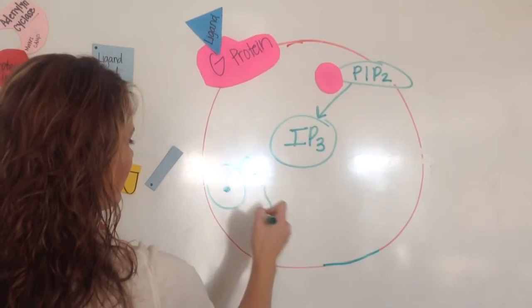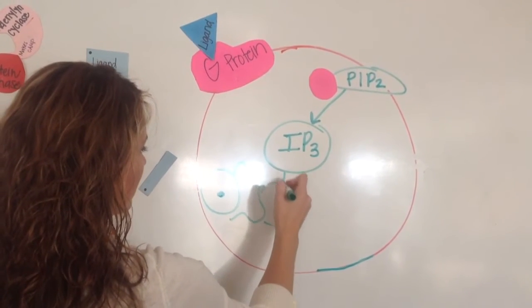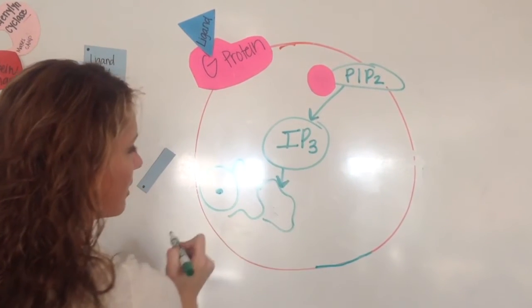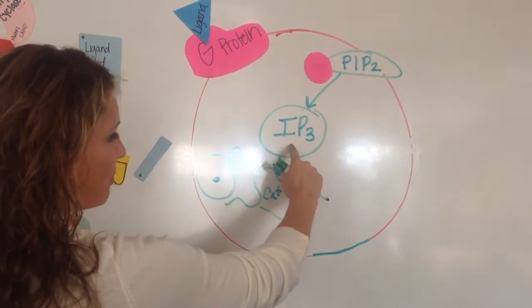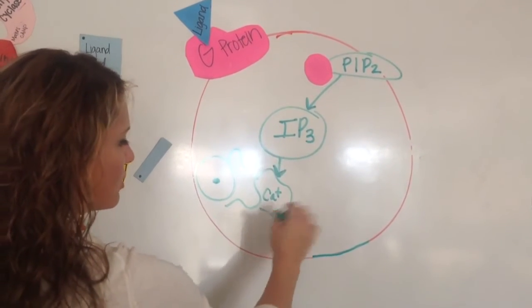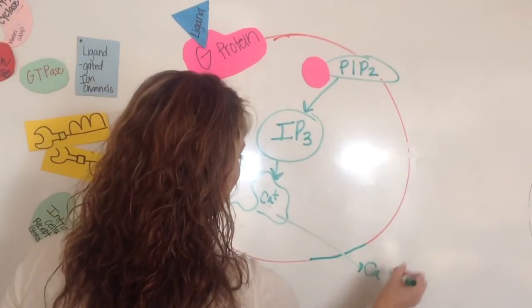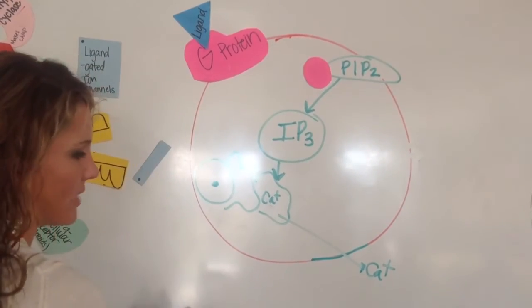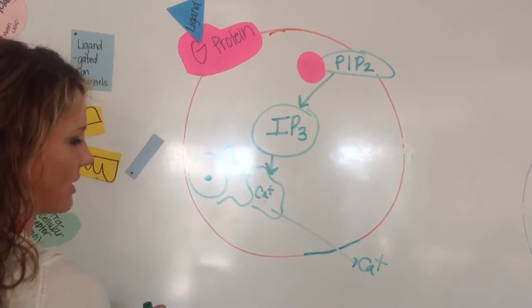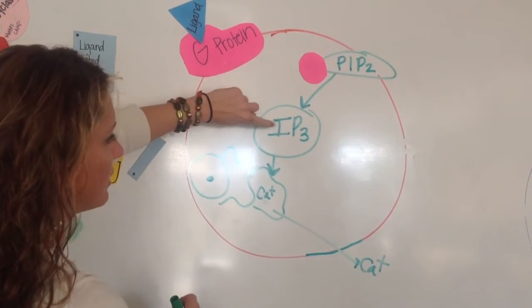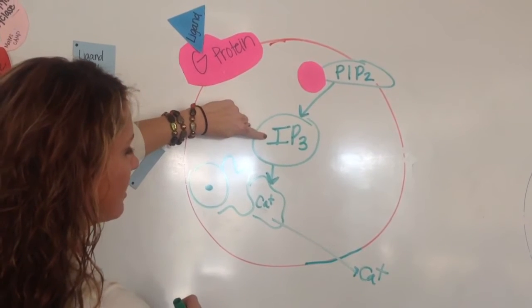And it goes in, or attaches to the smooth ER. And smooth ER, if you remember, stores calcium. So IP3 is the message that tells the smooth ER to release calcium, and the calcium will attach to the myosin fibers and muscle cells, and the muscle will flex. So the thing you want to know here is that IP3 is the secondary messenger.